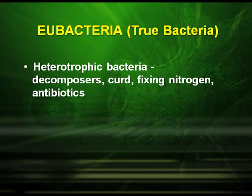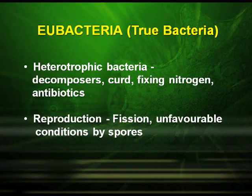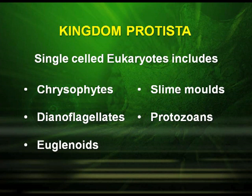The heterotrophic bacteria act as decomposers. They are also responsible for the preparation of curd from milk. They are able to fix nitrogen and help in the production of antibiotics. Some of them are pathogens — they damage human beings, farm animals, as well as other organisms. Reproduction is by fission, and under unfavorable conditions it is by spores.